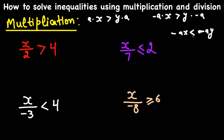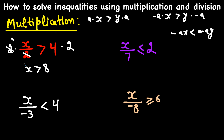Let's do some examples. First example: X divided by 2 is greater than 4. We want X alone on the left-hand side, so I multiply both sides by 2. The 2 cancels on the left giving us X, and 4 times 2 is 8. So X greater than 8 is the solution.